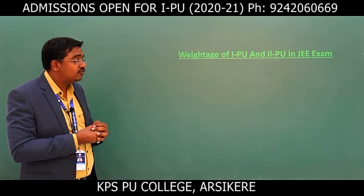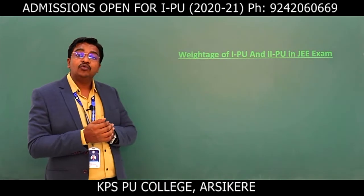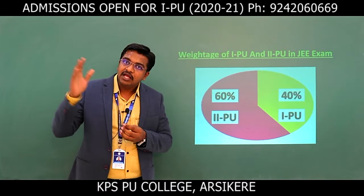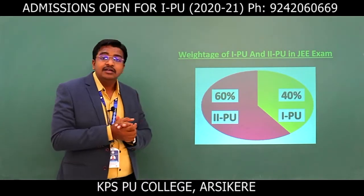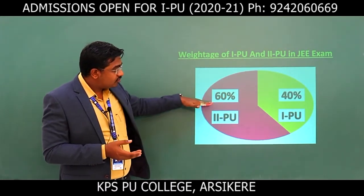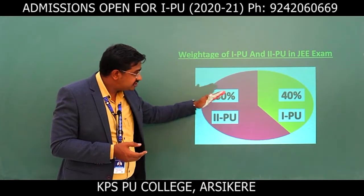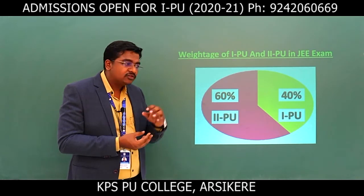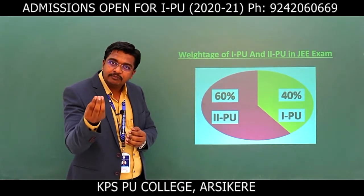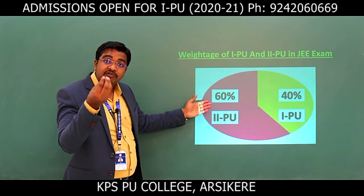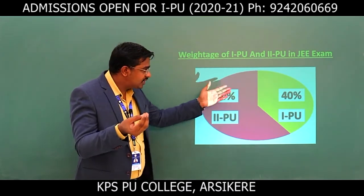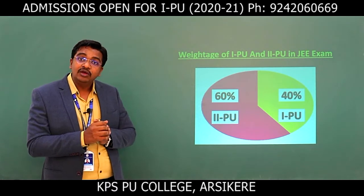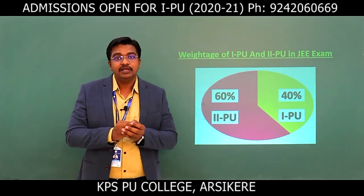Now observe the weightage for First PU and Second PU mathematics in the JEE exam. In JEE Advanced, Second PU contributes 60% and First PU contributes 40%. So approximately 55% comes from Second PU and 45-40% from First PU in terms of syllabus weightage.